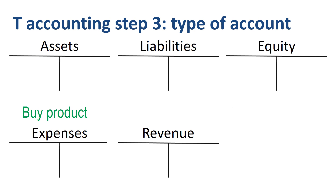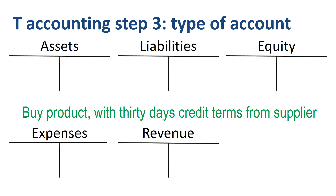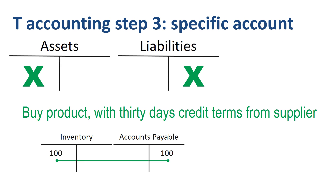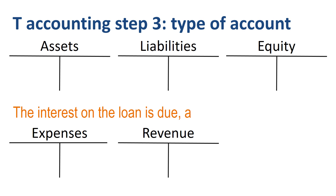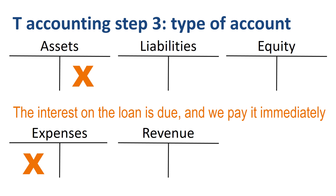Let's buy a huge amount of product — $100,000 worth of it — that we plan to sell to customers later on, and arrange with the supplier to pay his invoice in 30 days. First part: an asset going up. Second part: a liability going up. Debit inventory. Next, the bank notifies us that the interest on the loan is due, and we pay it immediately. Debit interest expense. If you credit an asset account like cash, the balance goes down.